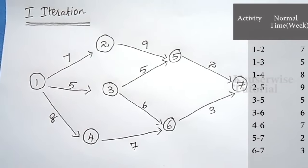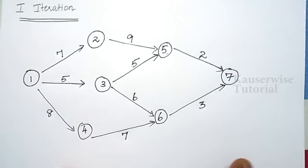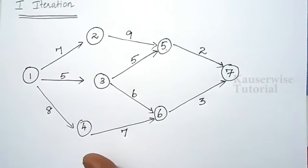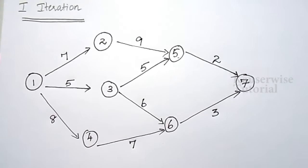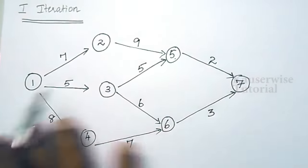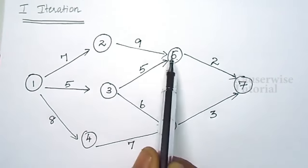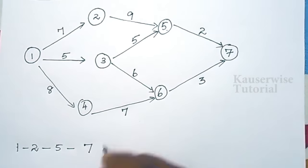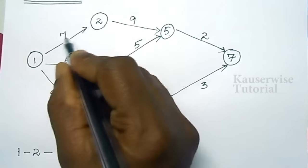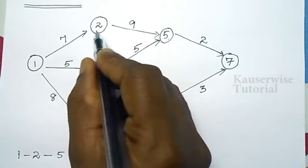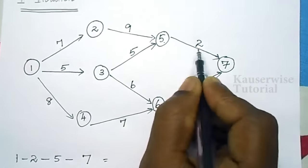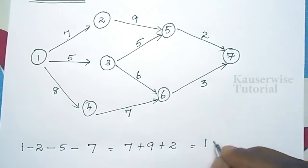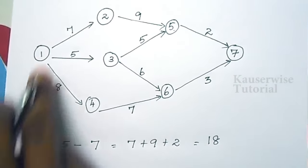After drawing the network diagram, the next step is to find the critical path — the path with maximum completion time. List all possible ways to complete the project. The first possibility is 1→2→5→7 with durations 7+9+2 = 18 weeks. The second possibility is 1→3→5→7 with durations 5+5+2 = 12 weeks.